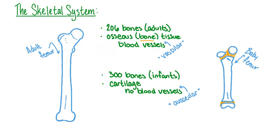Cartilage is different from bone tissue because cartilage is softer and more flexible. Additionally, cartilage does not possess a network of blood vessels, while bone tissue does. Over time, the non-vascular cartilage in the baby's skeleton develops into vascular bone tissue, and several of the baby's bones will fuse together.